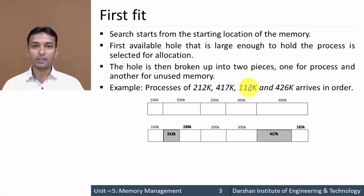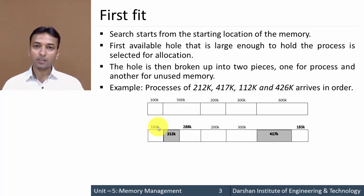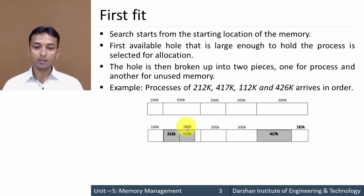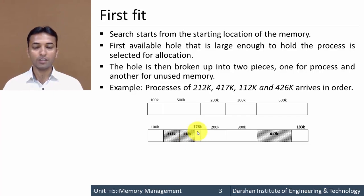For the third process requiring 112 KB, the algorithm searches from the start. The first partition is not large enough, but the second partition's remaining 288 KB hole is large enough. So this process is placed there. Again it is divided into two parts: 112 KB allocated to the process and the remaining 176 KB as unused memory.